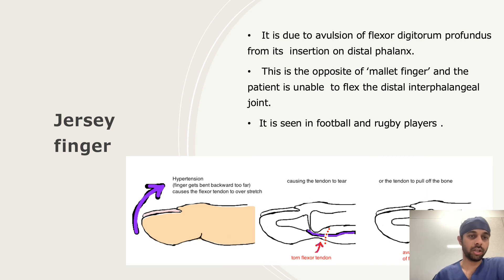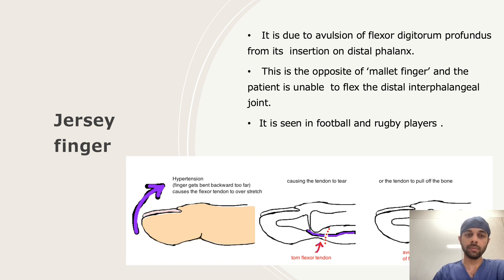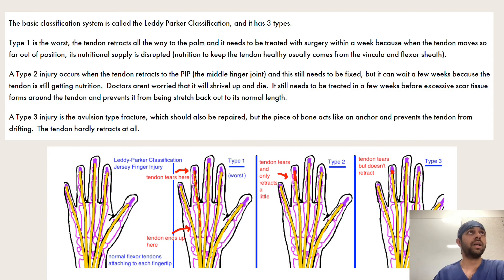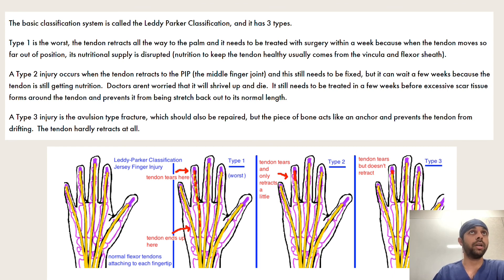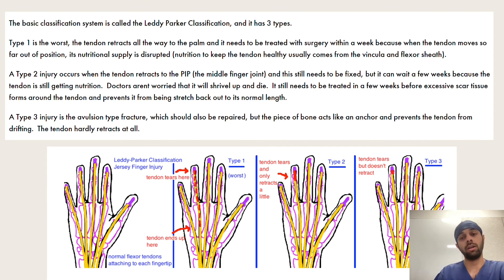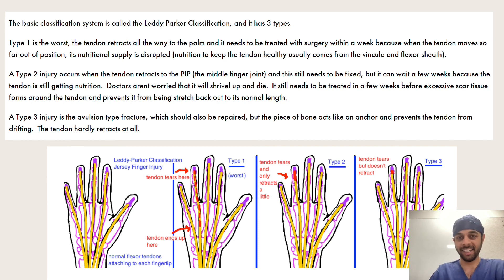The last deformity is the jersey finger — the opposite of the mallet. It is due to avulsion of the flexor digitorum profundus from its insertion on the distal phalanx, and is seen in football and rugby players. The Leddy-Parker classification has three types. Type 1 — the worst — the tendon ruptures and retracts all the way to the palm, requiring open surgical retrieval and re-attachment. Type 2 — the tendon tears and retracts only a little. Type 3 — the tendon tears but does not retract at all. All types have their specific management. We can probably discuss the treatment in much more detail at a later stage. Thank you very much.